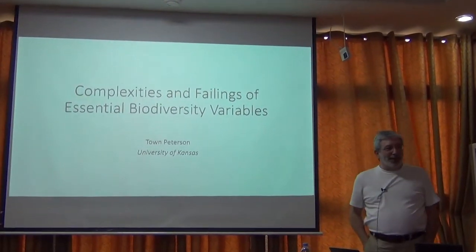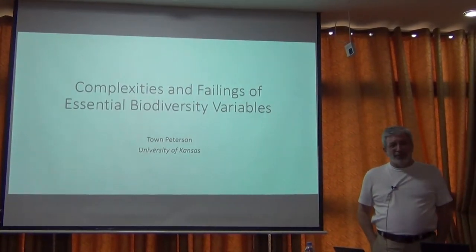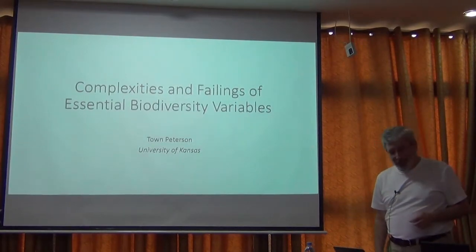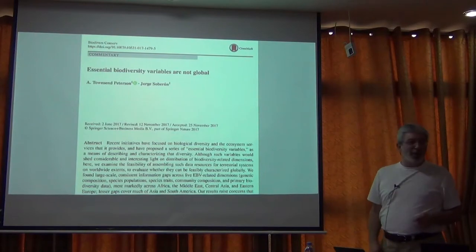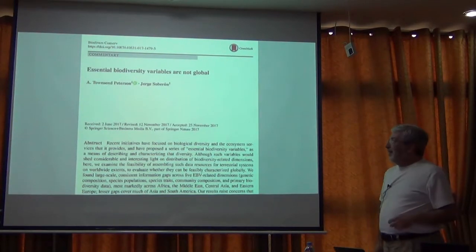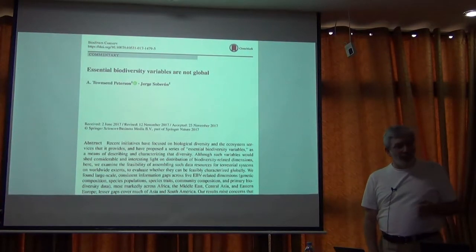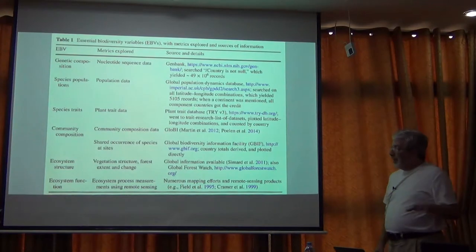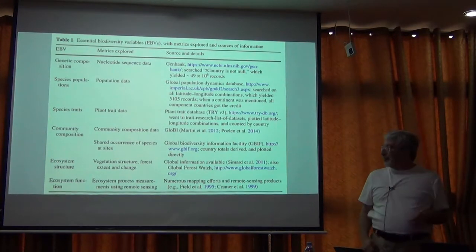I want to wrap up our discussions about essential biodiversity variables. I think you've seen most of this, but I really want to give a little bit more of a wrap-up because I think there's a continuous message through it that we ought to touch on. I'll give you a copy of this paper. The title is 'Essential Biodiversity Variables Are Not Global,' by me and a colleague named Jorge Soberon. This is mostly repeating things we've already talked about, but it's worth repeating just one more time. So you remember the six classes of essential biodiversity variables.